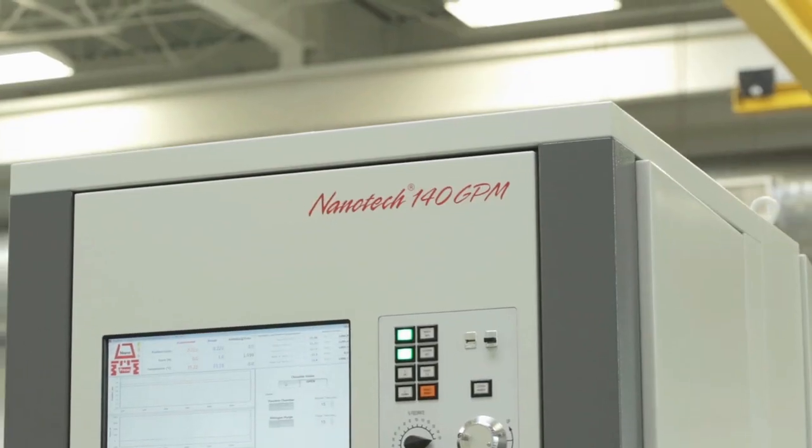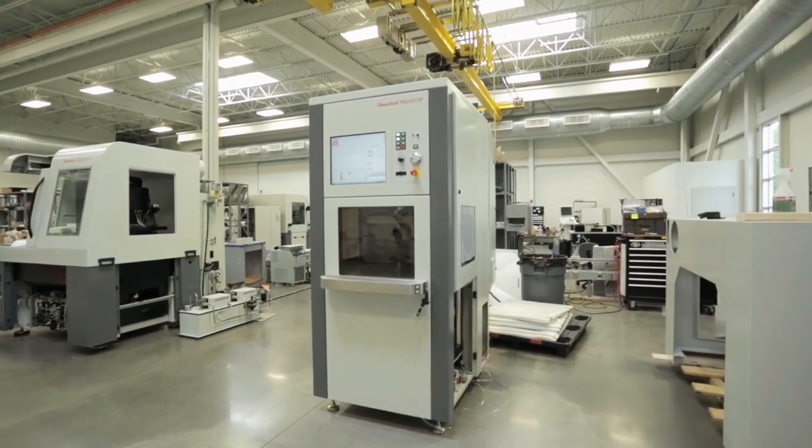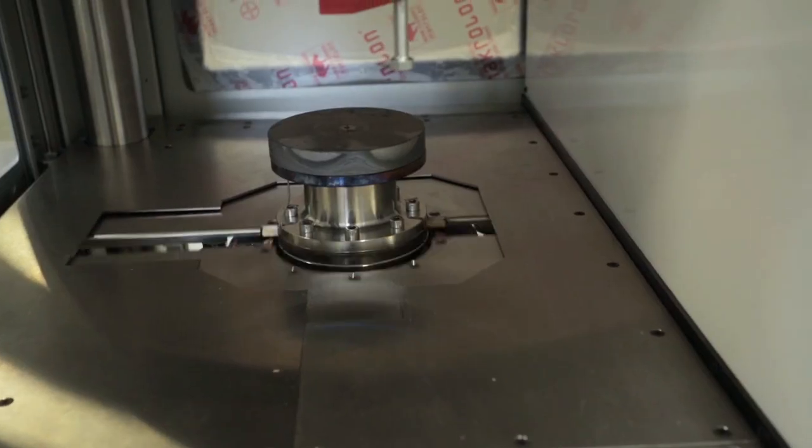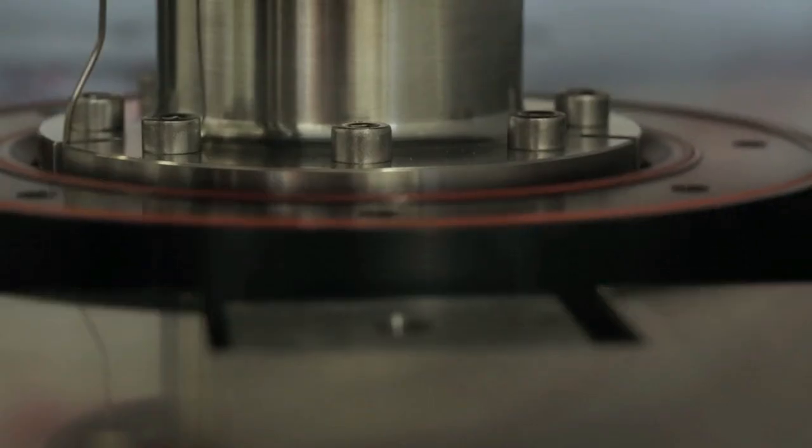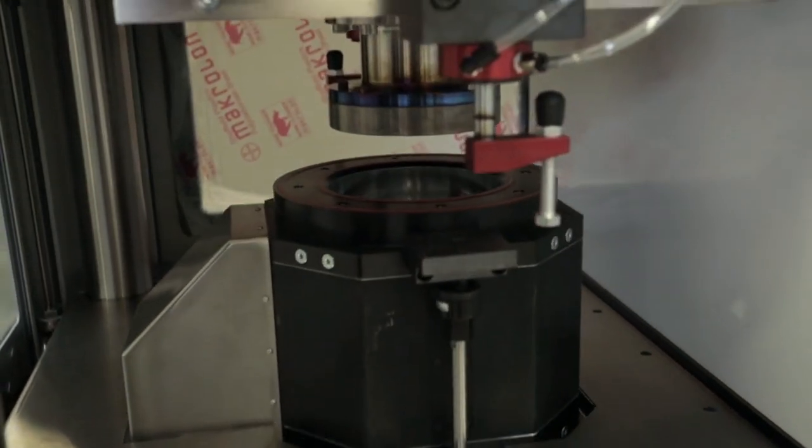This machine is the Nanotech 140 GPM. It's a glass-pressed molding machine, which means it's got a chamber with IR light, so it heats up a gob of glass between two molds. With this machine, we can replicate the surface of the molds very closely. What you put in for a mold, you're going to get on your glass, down to the surface finish level.